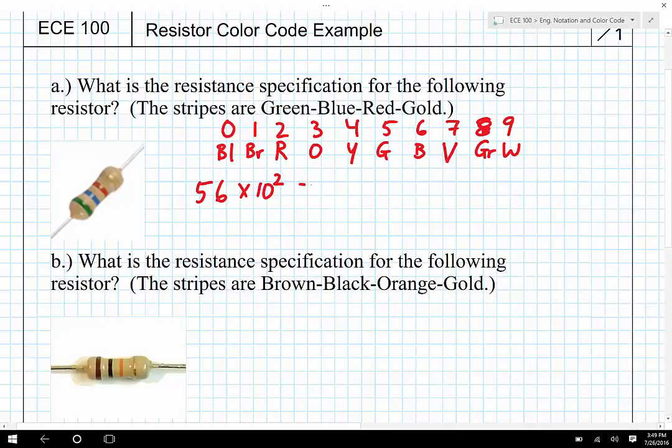This would be 5,600, so 5,600 ohms, or as an electrical and computer engineer would write it, 5.6 kiloohms, and then of course what's the tolerance? Well, the last stripe is gold, and gold corresponds to a tolerance of 5%, so I'm going to say plus or minus 5%, and it's just as easy as that.